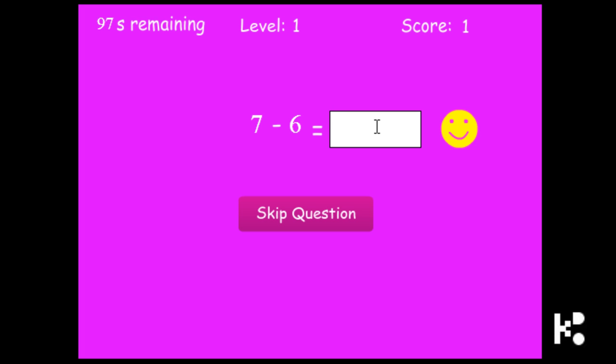Smile, and then 7 minus 6 is 1, 6 minus 5 is 1, 9 plus 1 is 10, and 1 minus 0.